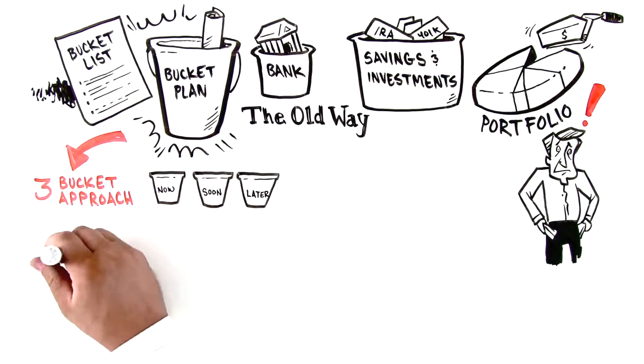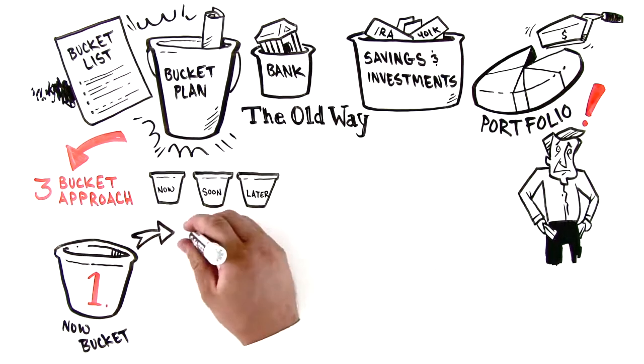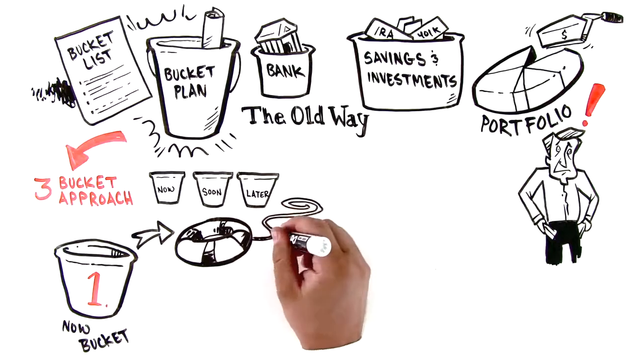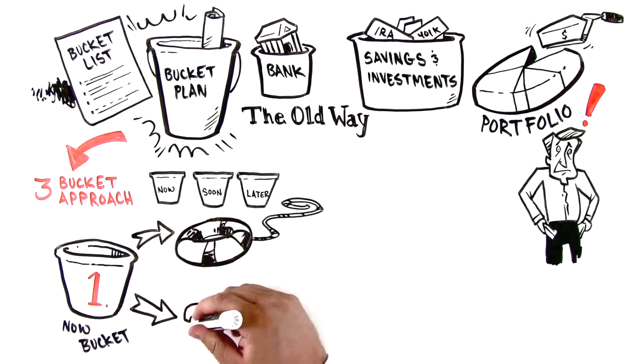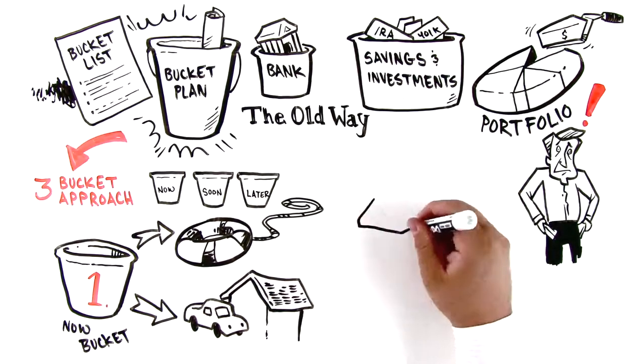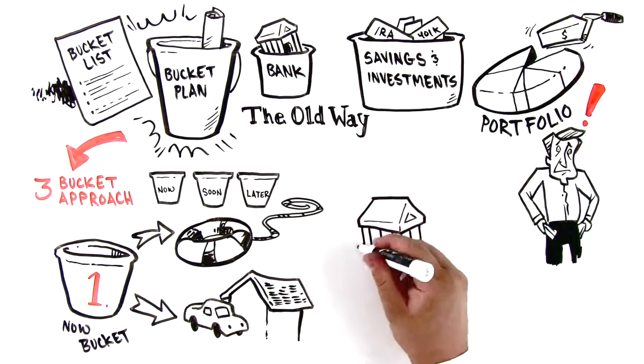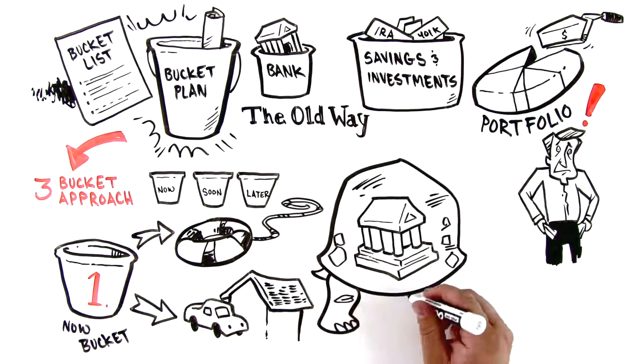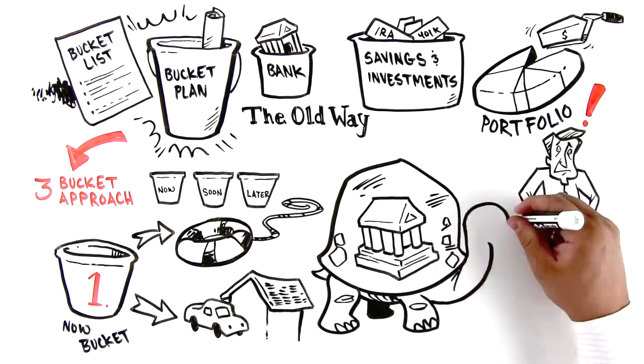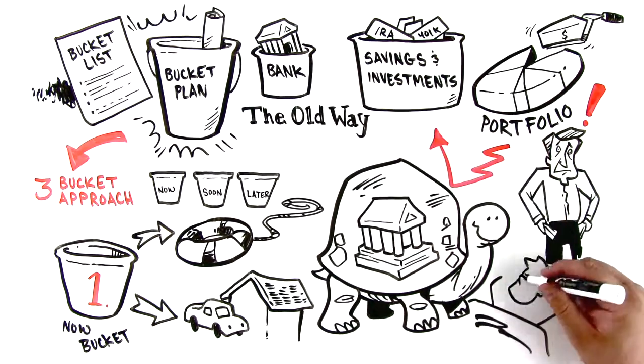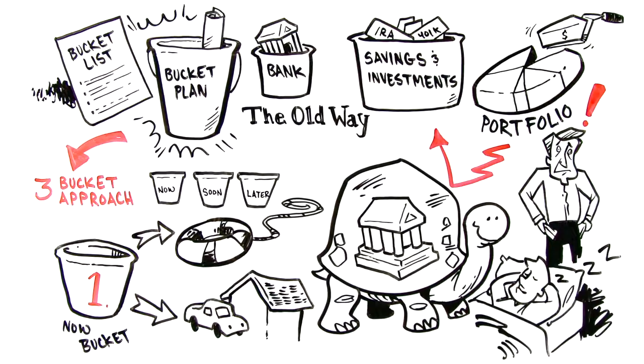First, the now bucket provides safe and liquid money. This includes money for your emergency fund and large planned expenses for the first few years of retirement, like a car or new roof on the house. There's little to no growth these days at the bank, but these cash savings or money market accounts also aren't exposed to market volatility. By pulling this money off the table, you can sleep better at night knowing it's there when you need it.